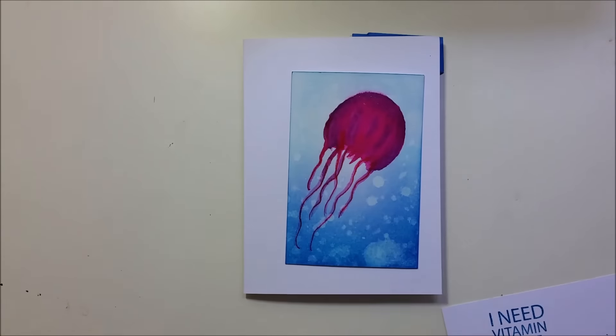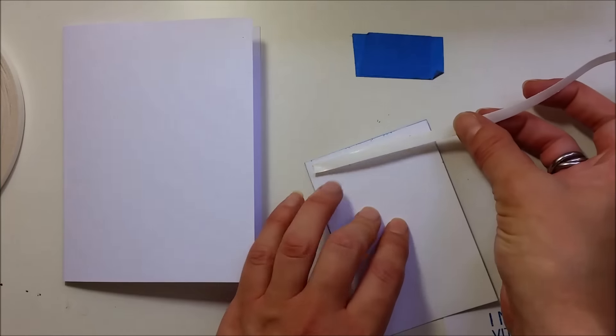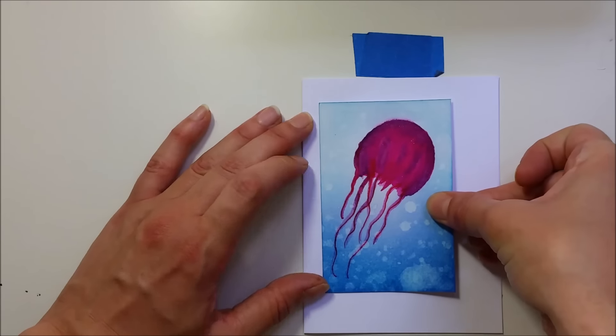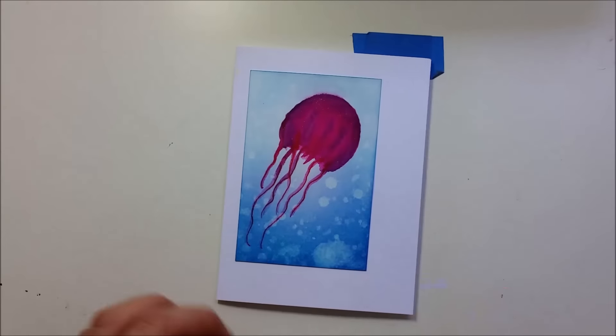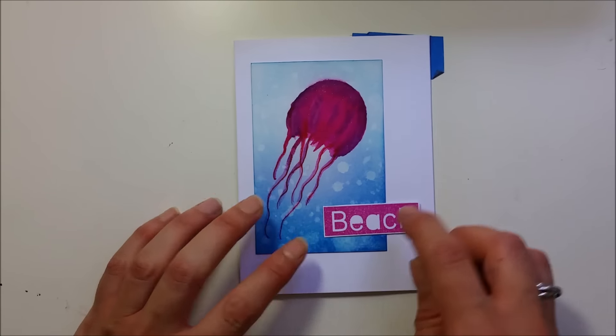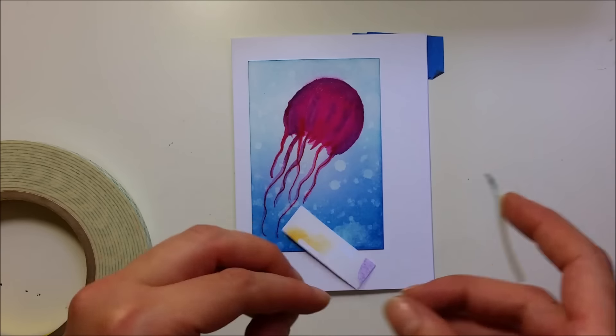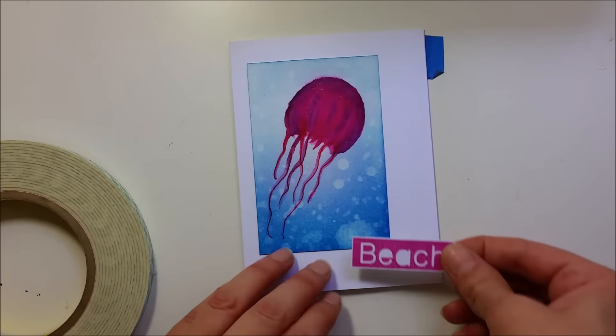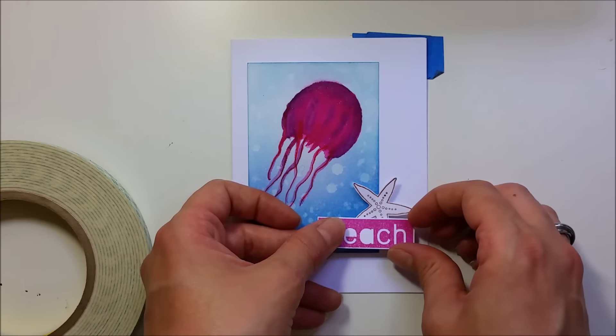So now I can assemble my card and I will be using a bit of adhesive tape. And my sentiment, I'll have it coming right here, and I'm gonna pop this with a bit of foam adhesive. And I'll put behind my little starfish here.